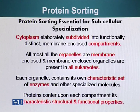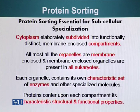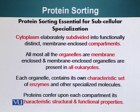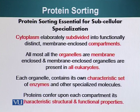The cytoplasm is a laboratory subdivided into functionally distinct membrane-enclosed compartments, which we call organelles. Almost all organelles are membrane-enclosed — exceptions include ribosomes, which don't have a membrane. An organelle is basically a structurally and functionally distinct part of the cell. Almost all eukaryotic cells have membrane-enclosed organelles, and each organelle contains its own characteristic set of enzymes and other specialized molecules. Proteins are basically tools, and consequently proteins confer upon each compartment its characteristic structural and functional properties, which makes sense because proteins perform most of the functions in the cell.